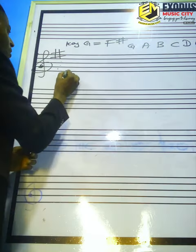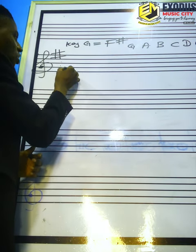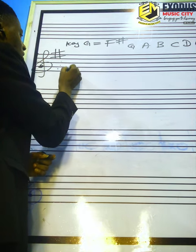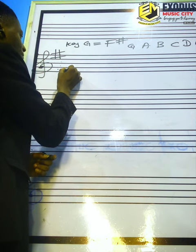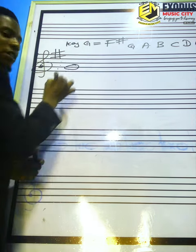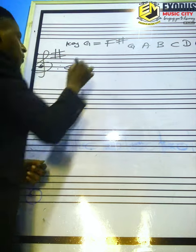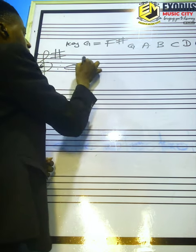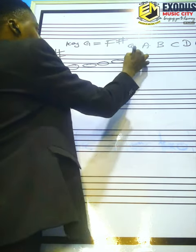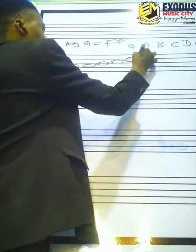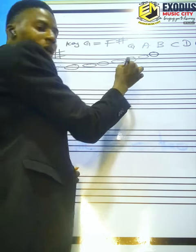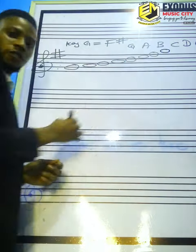Let's look for G on the staff. This line is E, then F, and G. So you start from this position — this is G, then A, B, C, D, E, F, and G.